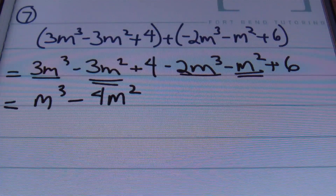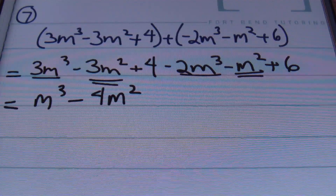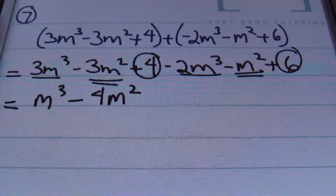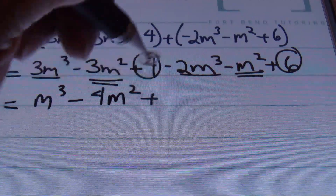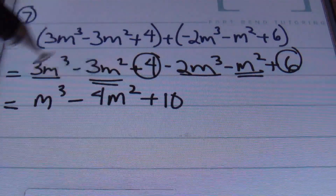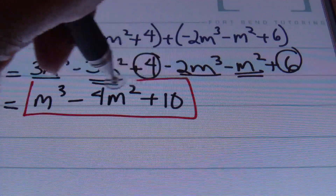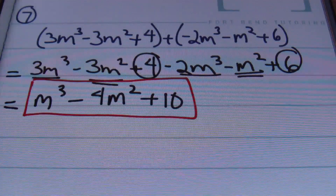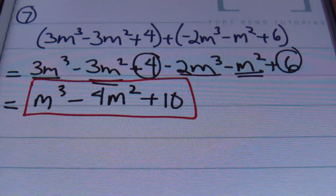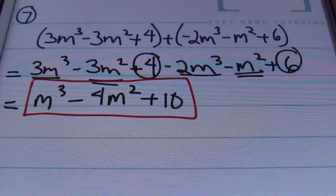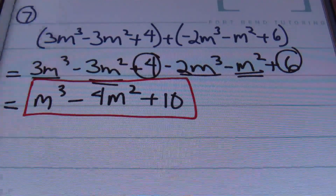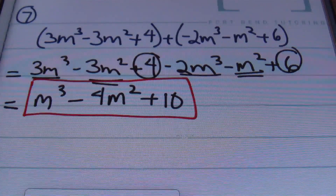Next we're looking at 4 plus 6. 4 plus 6 gives me 10, and 10 is the last term in our answer. So my result is m cubed minus 4m squared plus 10. Done and done, ladies and gentlemen. That's problem number 7.